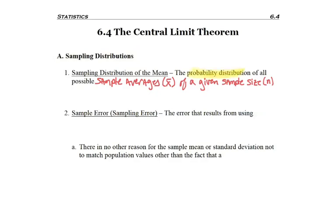We've dealt with probability distributions in the past, like the binomial distribution or distributions of data, but the important thing here is it's not just data — it's averages. And all of these averages are specifically sample averages. Another thing to point out is that this is different from a sampling error, which is an error that results from using a sample, not a population.